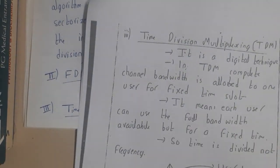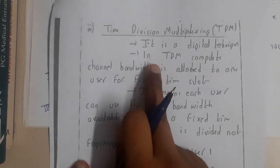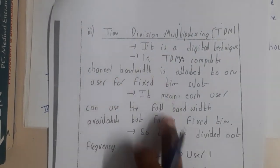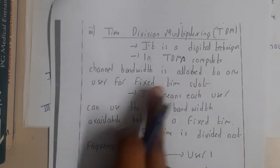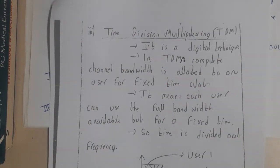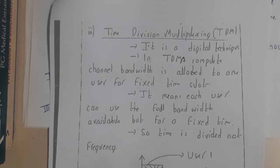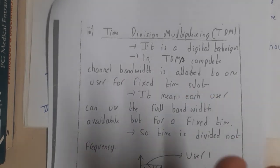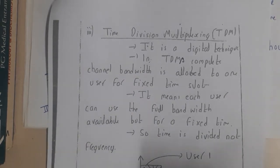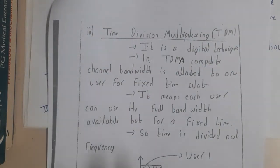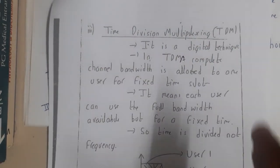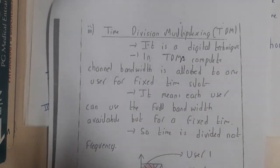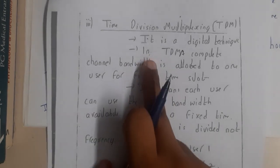We'll be using the same concept of time division multiplexing. In TDMA, the complete channel bandwidth is allotted to one user for a fixed amount of time slot. Assume you are communicating on a common landline — each user gets a maximum of five minutes. For five minutes you can talk, then the next five minutes someone else talks, and so on. What we are dividing here is time; the frequency is kept constant.